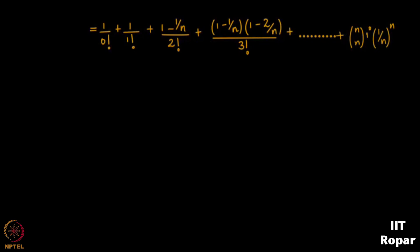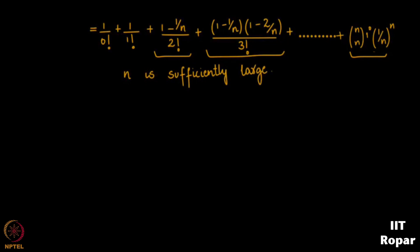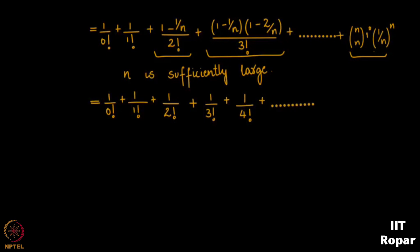Now what happens to these terms when n becomes sufficiently large — that is, when we choose n to be a very large number? If n is very large, then 1/n, 2/n, or any small number divided by n becomes very close to 0. Neglecting those terms, the series becomes 1/(0!) + 1/(1!) + 1/(2!) + 1/(3!) + 1/(4!) + ...